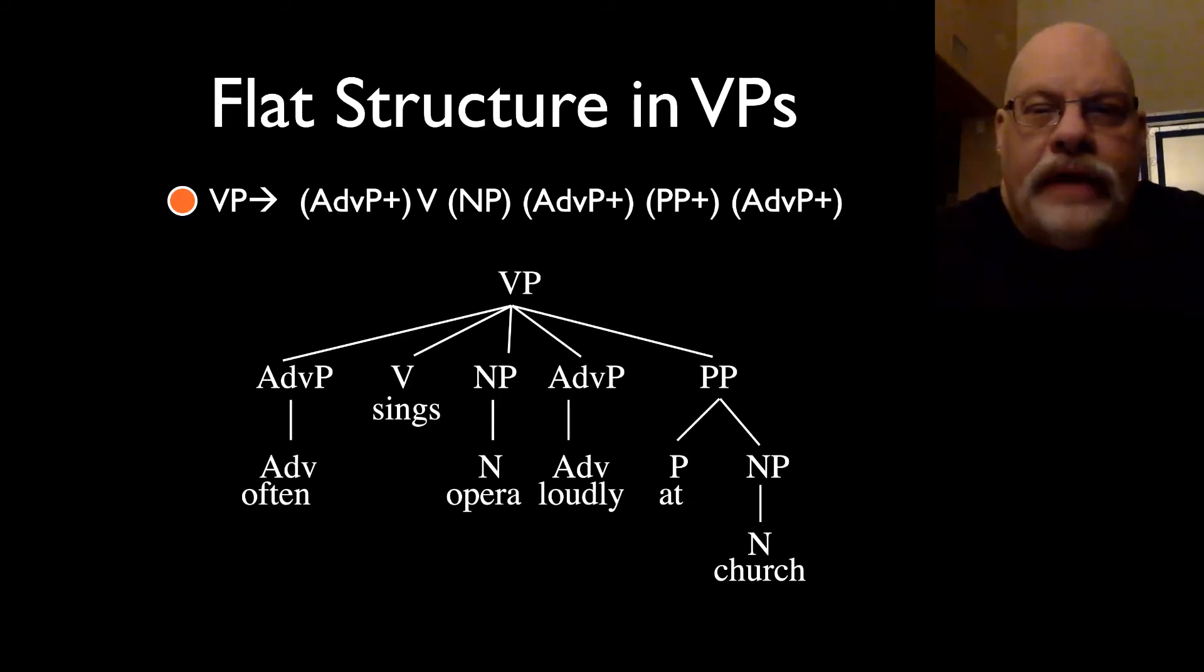So here's our flat structure for a verb phrase as created by the phrase structure rule that we proposed in previous units. And at the time, I pointed out to you that this is a pretty ugly rule, especially with all those parentheses that allow you to repeat items. But we'll see that when we actually probe this structure, there's evidence that this constituency is just wrong.